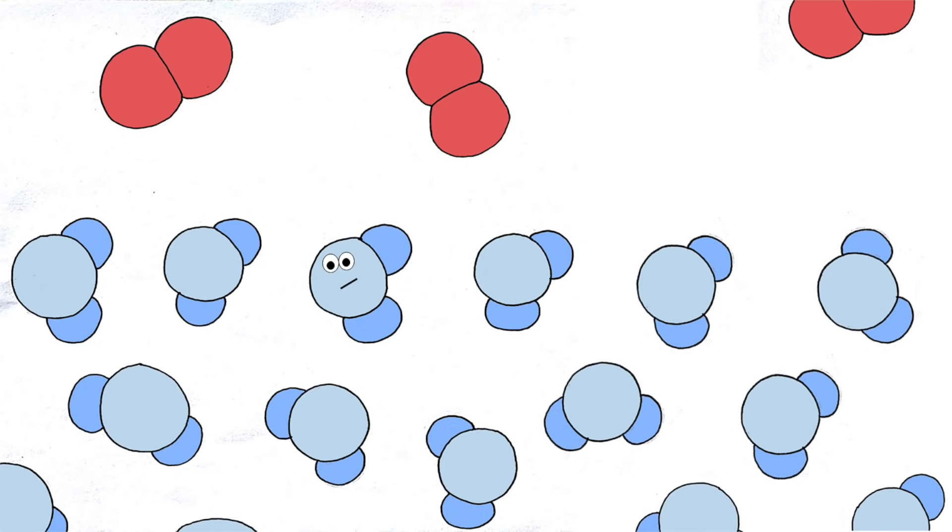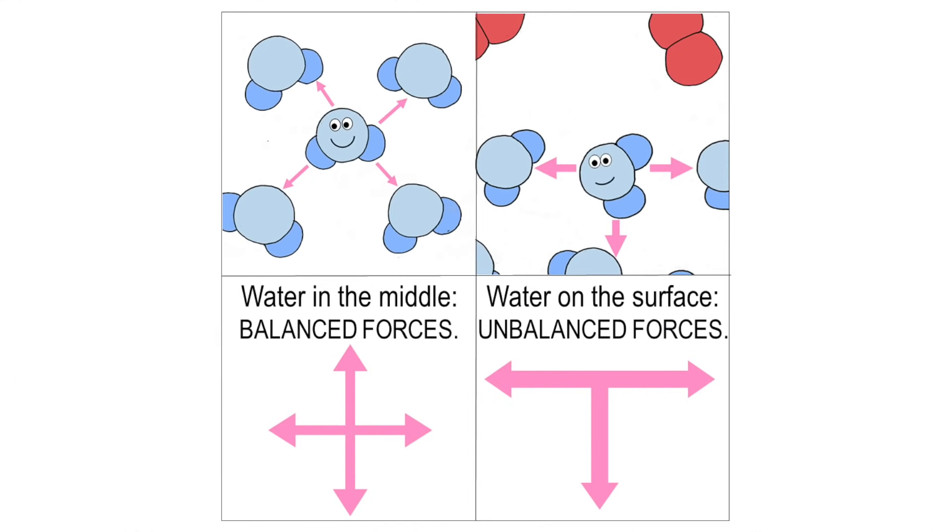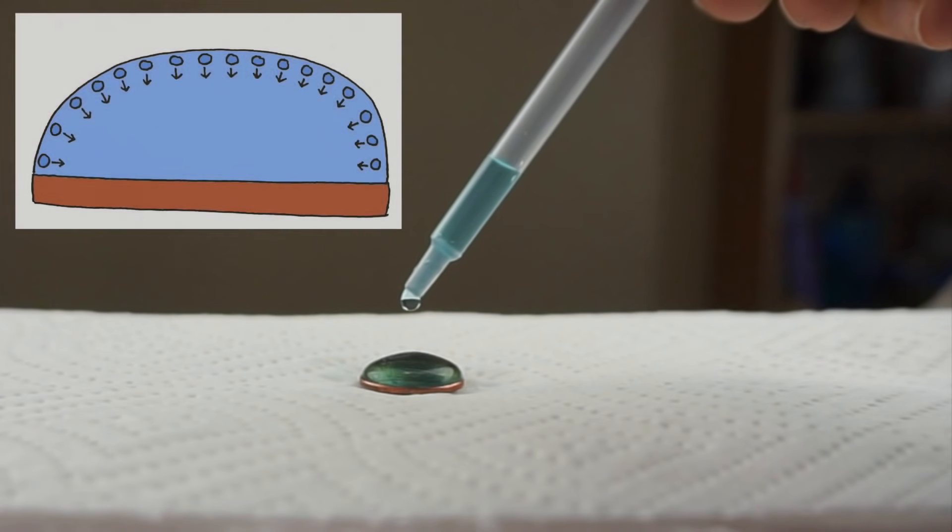They have air on top of them and they don't like that as much. They can't form any hydrogen bonds with the air, they aren't attracted to it at all. So what do they do? They bond extra tightly to their water neighbors to the side and below. So the water in the middle has balanced forces, while the water on the surface experiences unbalanced forces. And they create a little pull downward, which is what allows the water on the coin to make such a beautiful dome.